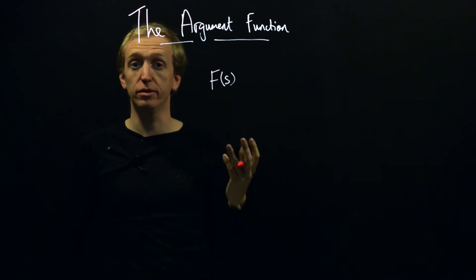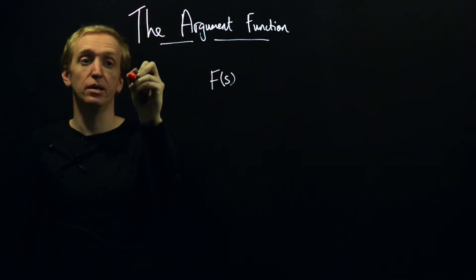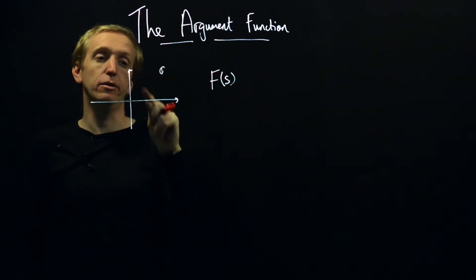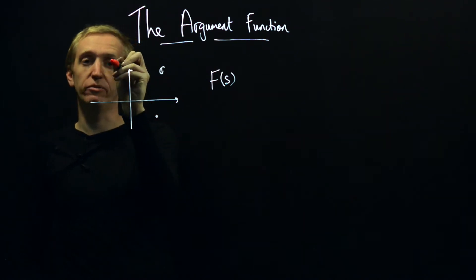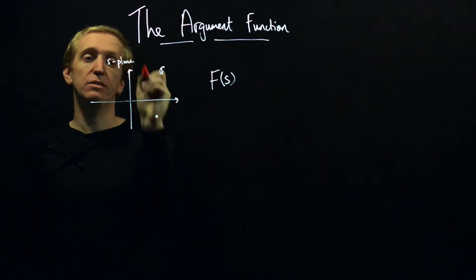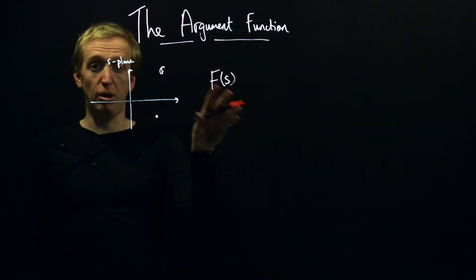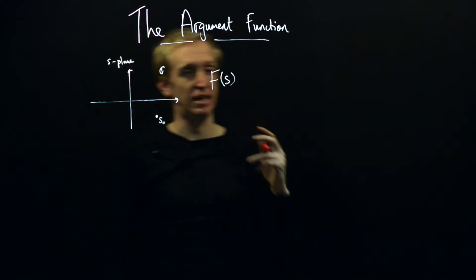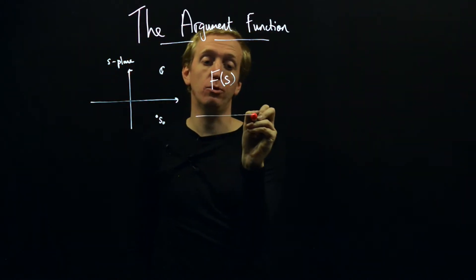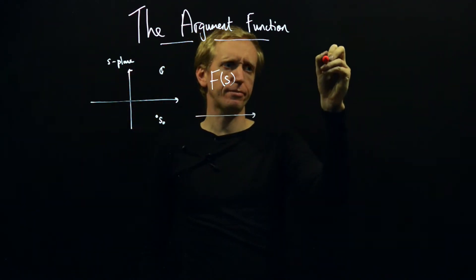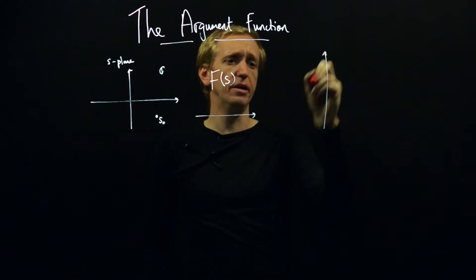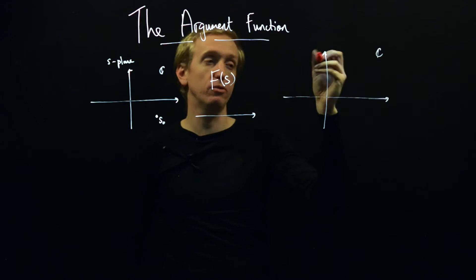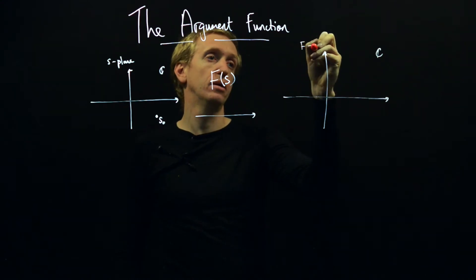A complex function is one that takes as its input a complex number. We have a picture of the complex plane over here, and I'm going to give it a name — I'm going to call it the S-plane. Our complex function takes complex numbers as inputs and spits out complex numbers, so it's a mapping from one copy of the complex plane to another copy of the complex plane over here, which we'll call the F-plane.